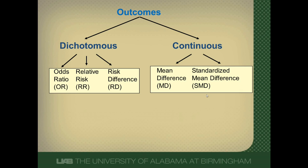Now, with the standardized mean difference, if the outcome measure is the same but it's measured differently in the individual studies, then we want to calculate something called a standardized mean difference. Sometimes this is called an effect size, though we prefer standardized mean difference. We need to standardize the results of each of the individual studies to a uniform scale so that we can combine them. They can't all be measured using different scales, because then we couldn't combine them — it wouldn't make any sense.